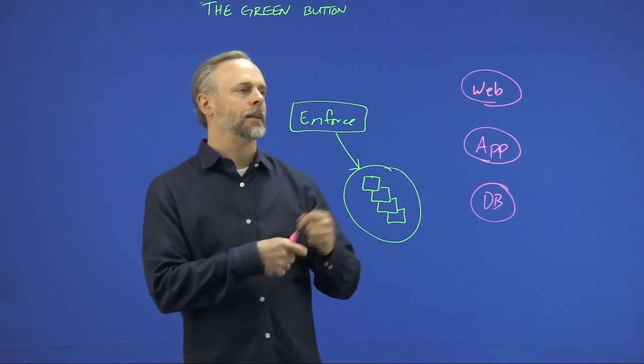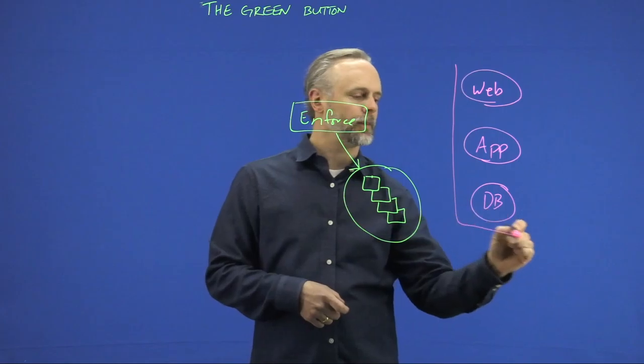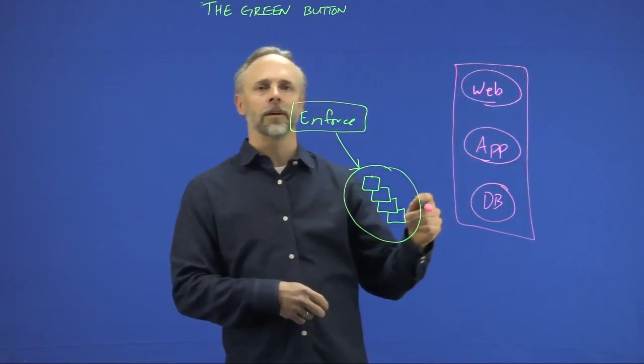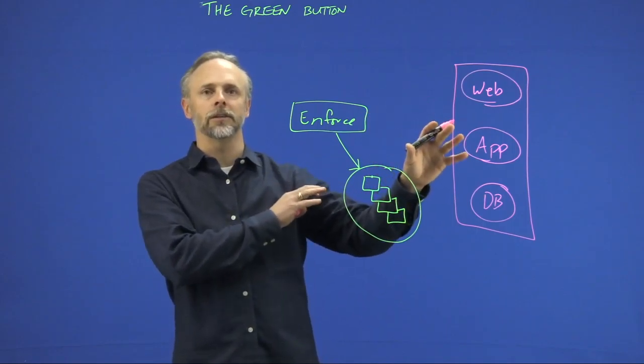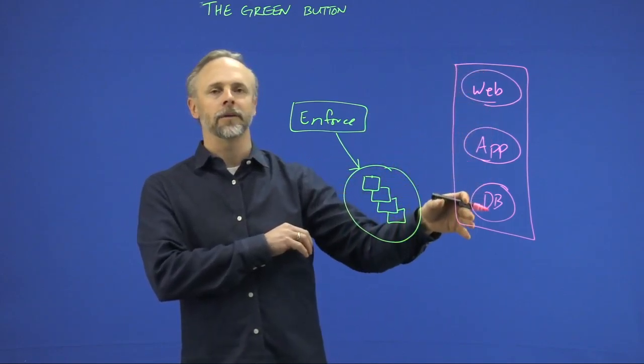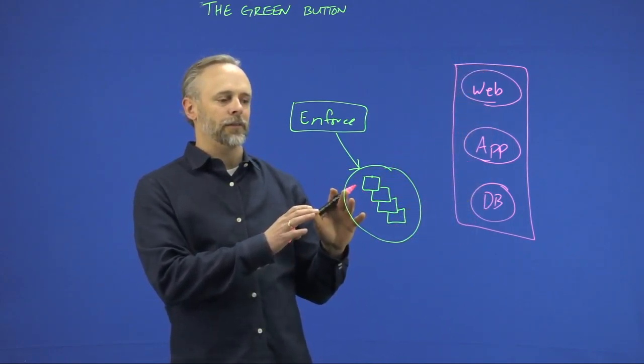But if you really get in and turn on the machine learning algorithms, essentially we would scope this to say I want to just look at the web, app, and database. Now when I say that we want to scope that, that's considered to be the internals of the application.